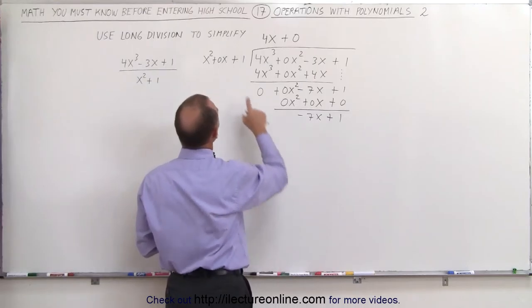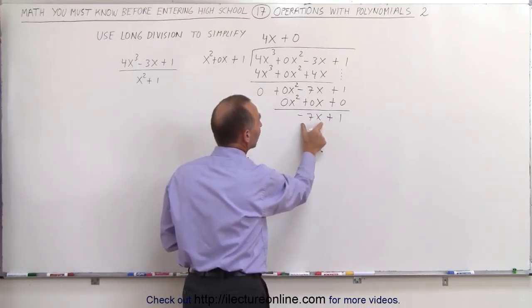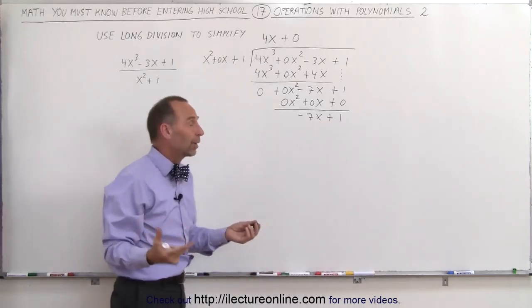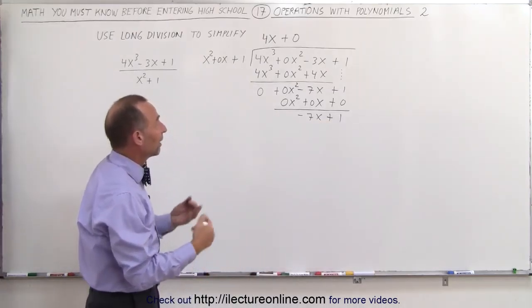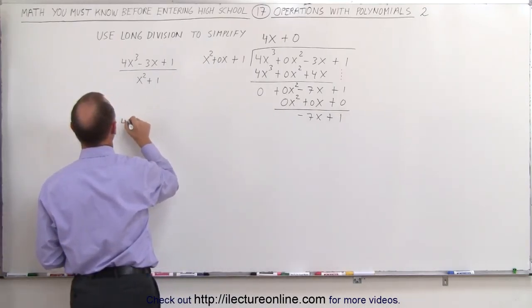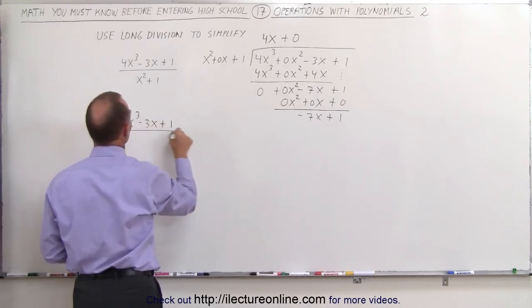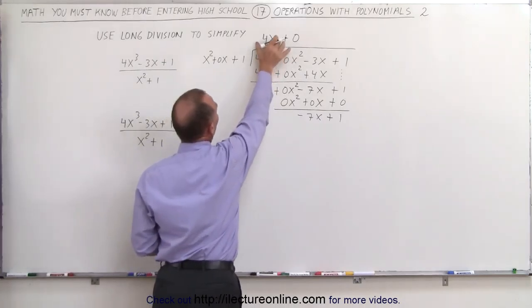So now we're basically done, because we know that x² no longer fits into a minus 7x. The smallest exponent we can have here is an x², we no longer have one, so we're basically done. The answer then would be that this cannot be written as, so 4x-squared minus 3x plus 1, divided by x² plus 1, cannot be written as 4x.